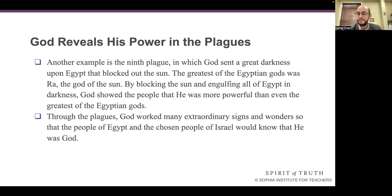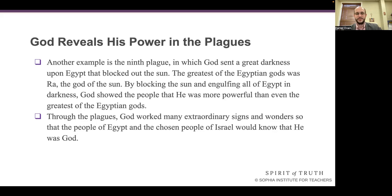Another example is the ninth plague, in which God sent a great darkness upon Egypt that blocked out the sun. The greatest of the Egyptian gods was Ra, the god of the sun. By blocking the sun and engulfing all of Egypt in darkness, God showed the people that he was more powerful than even the greatest of the Egyptian gods. So, through the plagues, God worked many extraordinary signs and wonders so that the people of Egypt and the chosen people of Israel would know that he was God.